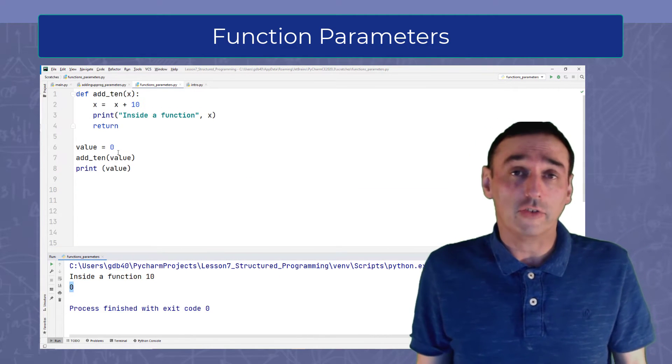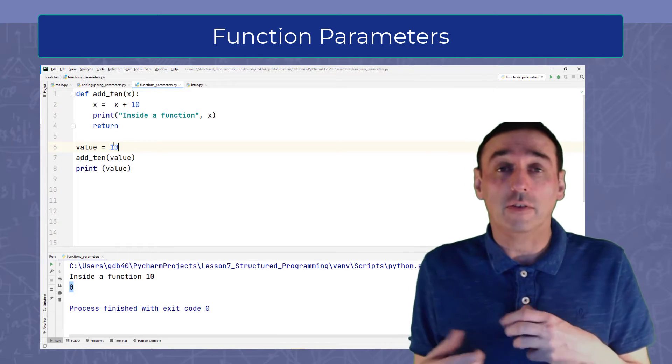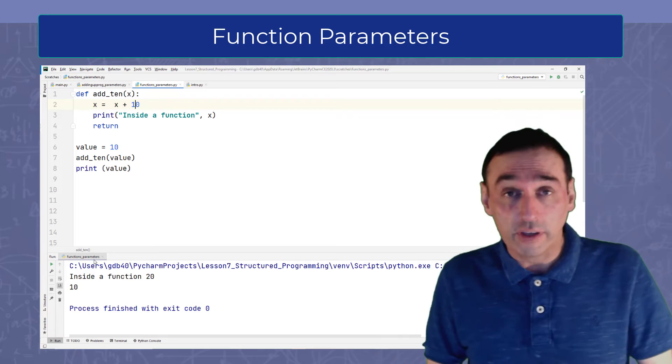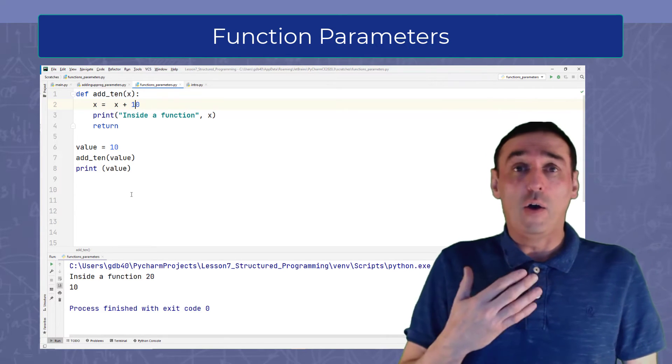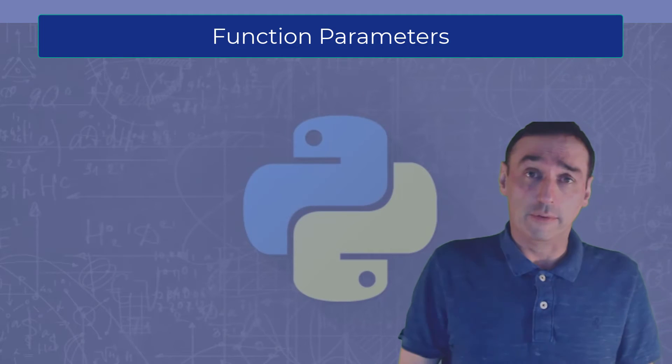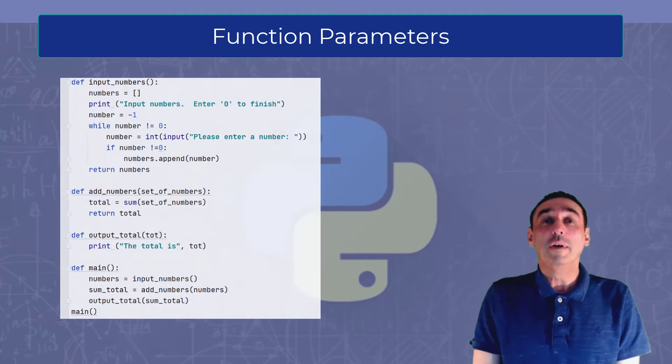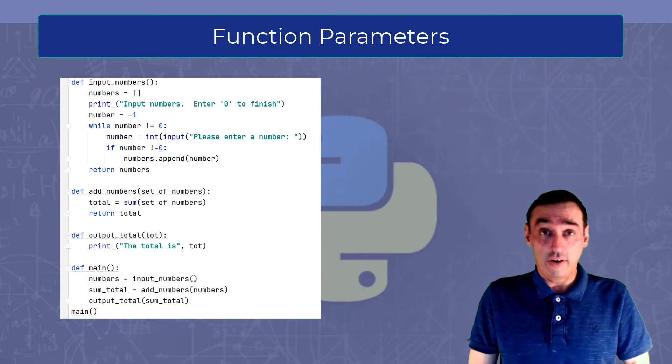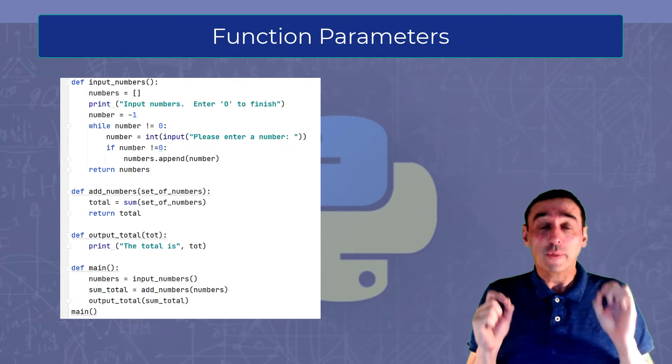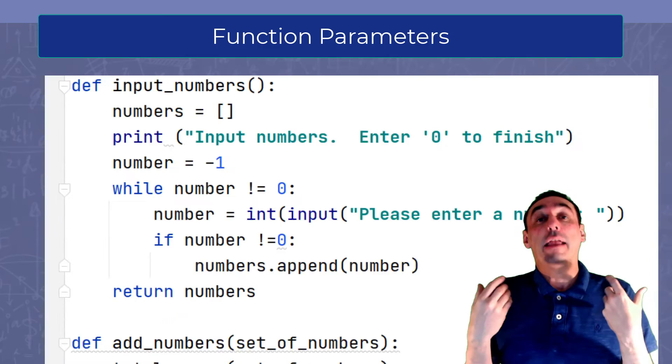So let's look back at the program we were doing earlier to see how we can incorporate parameters and remove all global variables. So here we have the program in its entirety. We have removed both global variables, numbers and total, and put them inside the function.